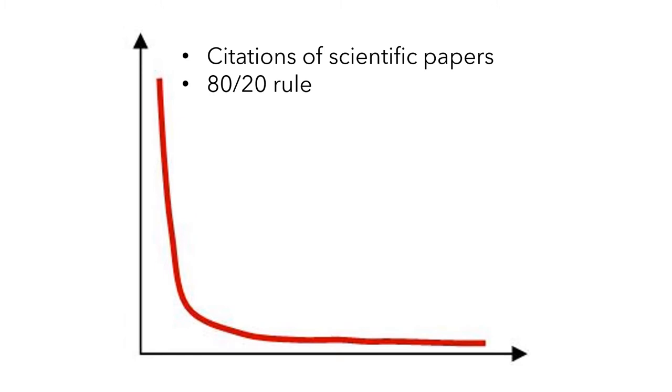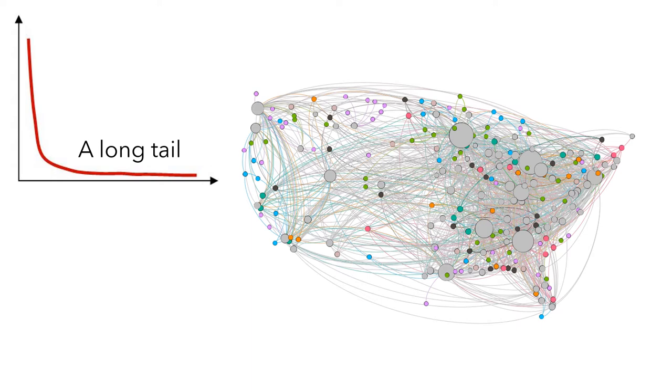In random networks, most of the nodes have the same number of ties. So the random networks have a scale in its node connectivity.